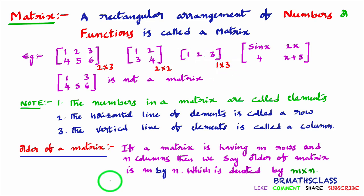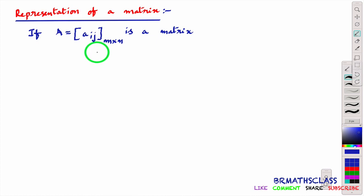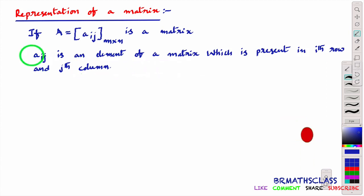Now the important one: the representation of a matrix. Many students get confused in the representation of a matrix. Whenever you see the notation A = [Aij] of order m by n, it tells that this matrix contains m rows and n columns. What is Aij? Aij is an element of the matrix.